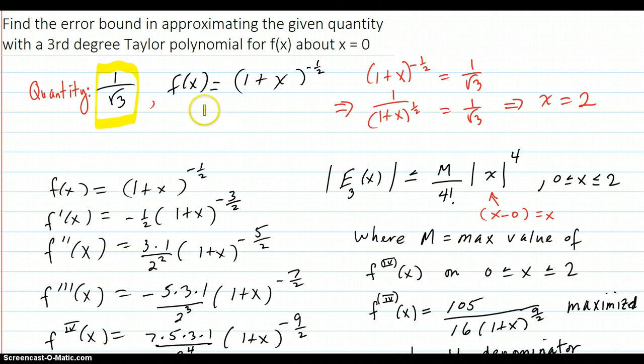Using the Taylor polynomial at x equals 0 for this function. So what x value would that be that would produce this quantity? So I set the function equal to this and I see easily by inspection that x is equal to 2.